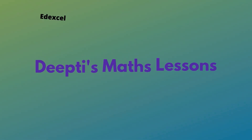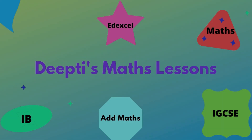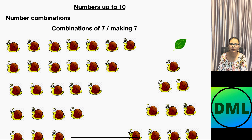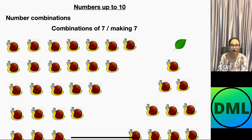Hello everyone! In today's video we are going to see numbers up to 10 for Year 1 students. Let's get started. Numbers up to 10 — number combinations. In the previous video we have seen the number combinations up to 6, and now we are going to see the number combinations of 7.